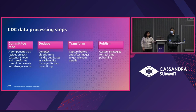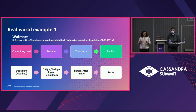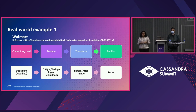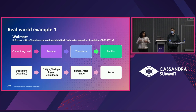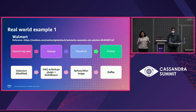We looked at some common examples of customers who have used CDC with Cassandra. Walmart had the exact same four steps. They used a modified Debezium connector to read data from the commit log, and an internal tool called Data Acquisition Tool, also known as DAC, with a custom plugin to read data from the commit log. They used a Redis Bloom filter to cache the data and dedupe it. Their public documentation doesn't state exactly how they transform the data, but they do mention creating a before and after image, and then they stream the data to Kafka.